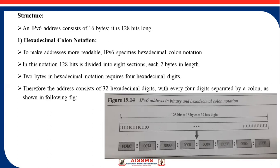In this notation, the 128 bits are divided into 8 sections, each 2 bytes in length. Two bytes in hexadecimal notation require 4 hexadecimal digits. Therefore, the address consists of 32 hexadecimal digits with every 4 digits separated by a colon, which is shown in this figure. This is the IPv6 address separated by a colon.